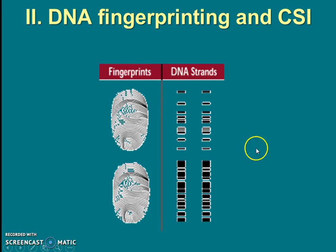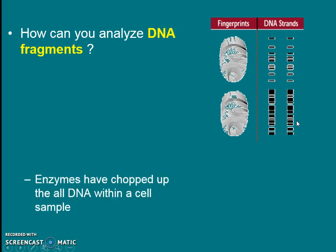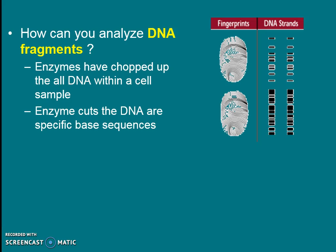We're going to create a DNA fingerprint that looks something like this, which shows DNA fragments. When I get a DNA sample from a crime scene, I might have cells from hair, blood, semen, a cheek cell — anything I can find. I can get the DNA from it and use an enzyme to cut up the DNA in a very specific way. I'll have the whole amount of DNA and this enzyme will cut the DNA in specific places at specific base sequences.